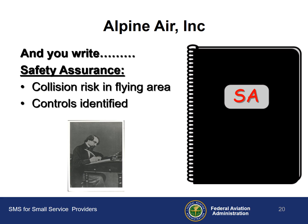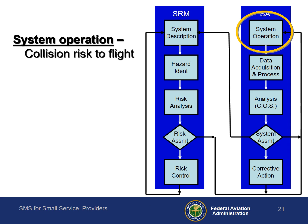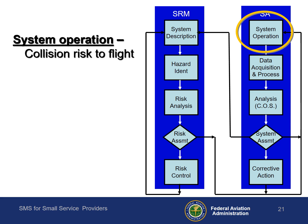You take out your safety assurance notebook and write about the risk and associated controls. Now that you have defined your risk, it's time to put your controls in place to make them operational.